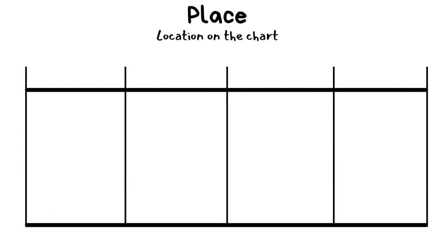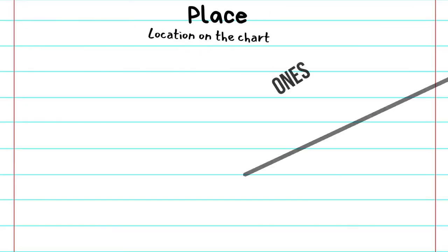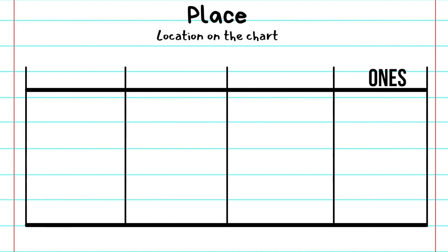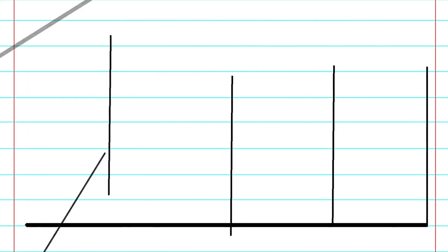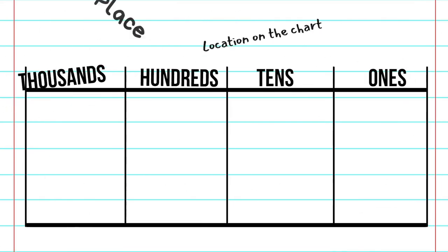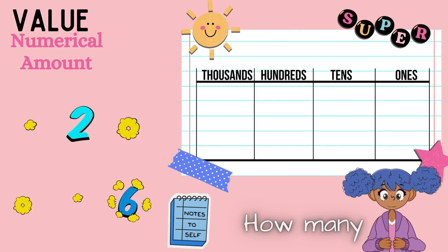And when we talk about place, I want us to talk about some of the vocabulary that we heard. Place is just like an address. That's going to be the location on the chart. We have the ones, that's the location. Tens is a location. Hundreds is a location. Thousands is a location.